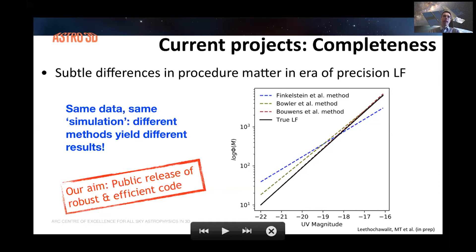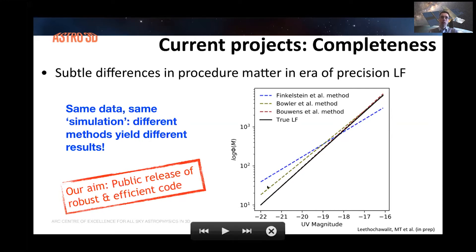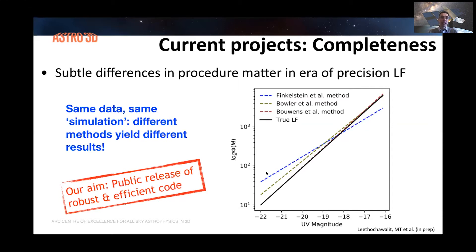Details very much matter when one carries out source recovery simulations. Nietzsche is showing in the plot here that depending on subtleties in how one implements source recovery simulations, the recovered luminosity function can be quite different from the true input luminosity function that we are simulating, depending on the exact procedure followed. We are aiming to release soon a public robust code that will be very useful both for analysis of current Hubble data surveys as well as for future James Webb and WFIRST surveys.